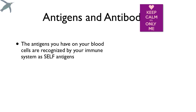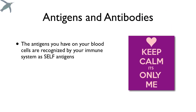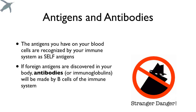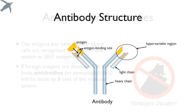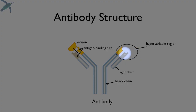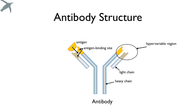Many antigens are what we call self-antigens — they identify you as you. The problem comes if you are exposed to foreign antigens. If you're exposed to antigens that are not native to you, your body is designed to make antibodies against them. If you've never seen antibodies before, this is what they look like. There's a hypervariable region — this is the part that binds with the antigen.